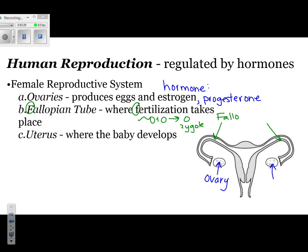Sometimes, instead of being called a fallopian tube, it can also be called an oviduct — feel free to use that terminology if you're more familiar with it. The last part is the uterus. The uterus is where the baby, or fetus, develops.